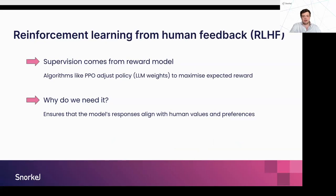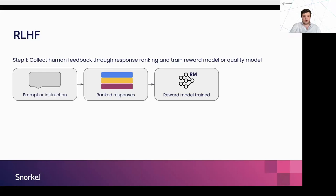RLHF — reinforcement learning from human feedback — works in a very different paradigm. Separate from training the LLM weights, we need a reward model. The supervision signal comes from a model that can determine quality and assign rewards for the LLM's responses. Using algorithms like PPO, we adjust the LLM's weights to increase the expected reward over time. The reward model encodes human values or preferences — for example, higher reward could be associated with more harmless outputs. Building that reward model requires a lot of human feedback: we take our instruction set, generate lots of responses, ask annotators or use model feedback to rank them, and produce a preference dataset. From this, we train a reward model.